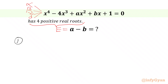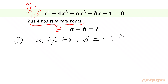Sum of roots: alpha plus beta plus gamma plus delta equals minus of coefficient of x³ over coefficient of x⁴, which is minus of minus 4 over 1, and the value will be equal to 4. This is our equation number 1.